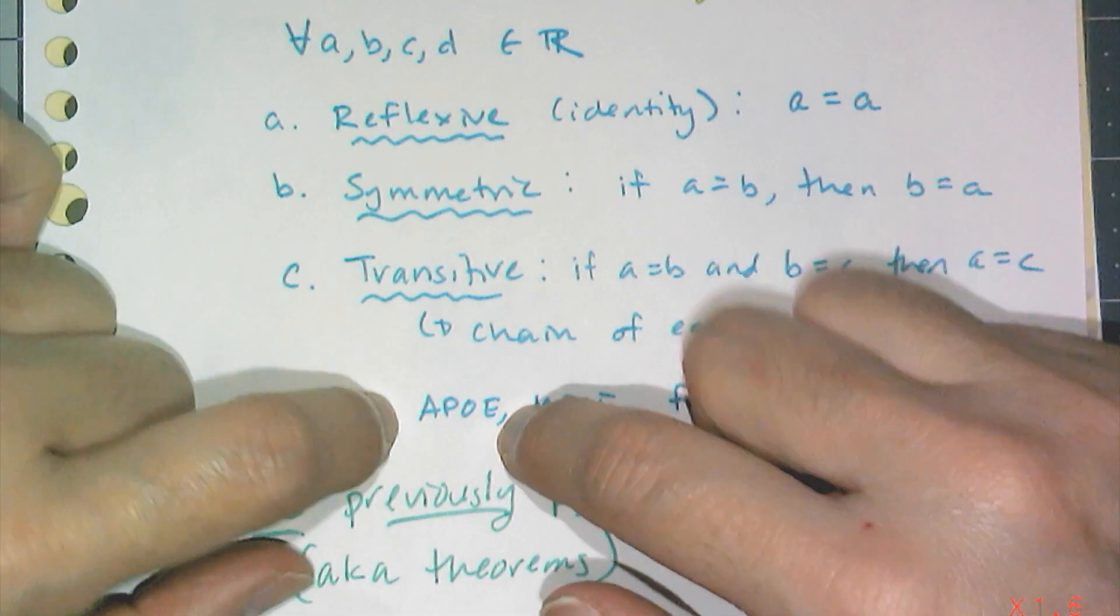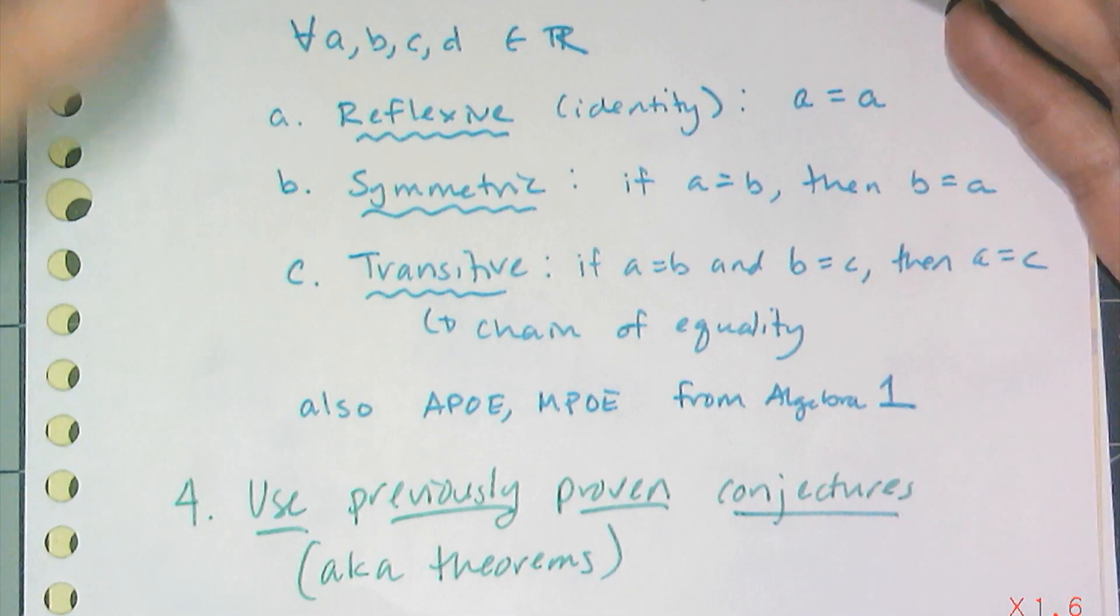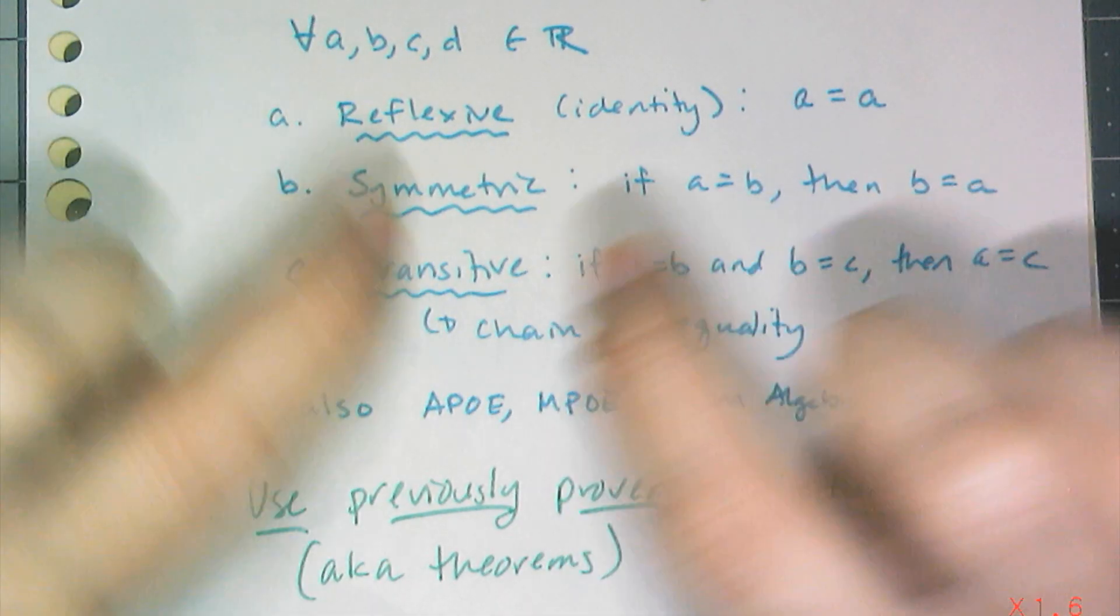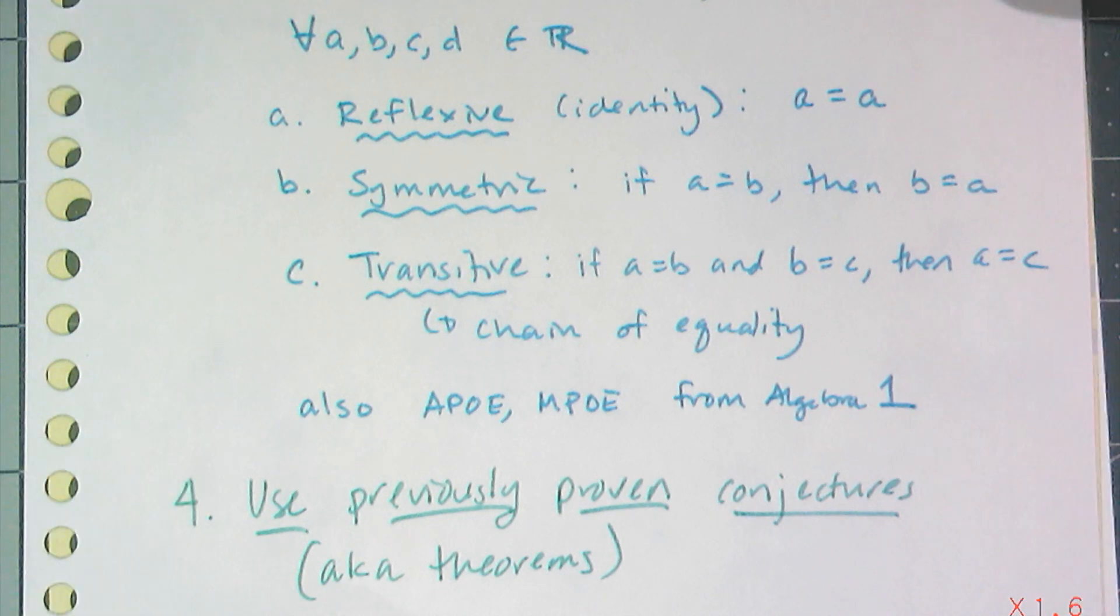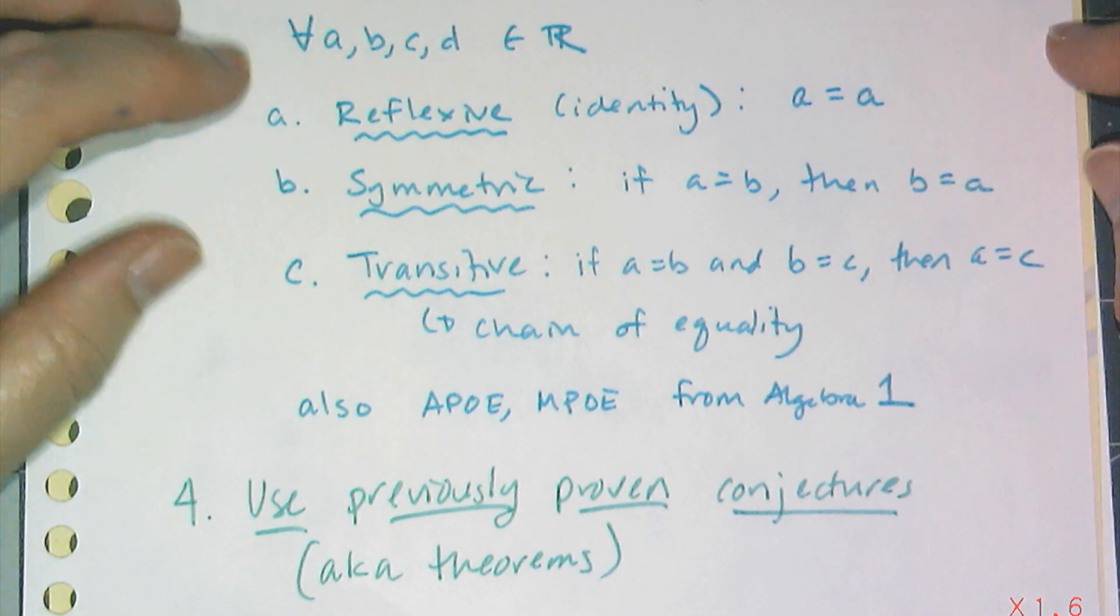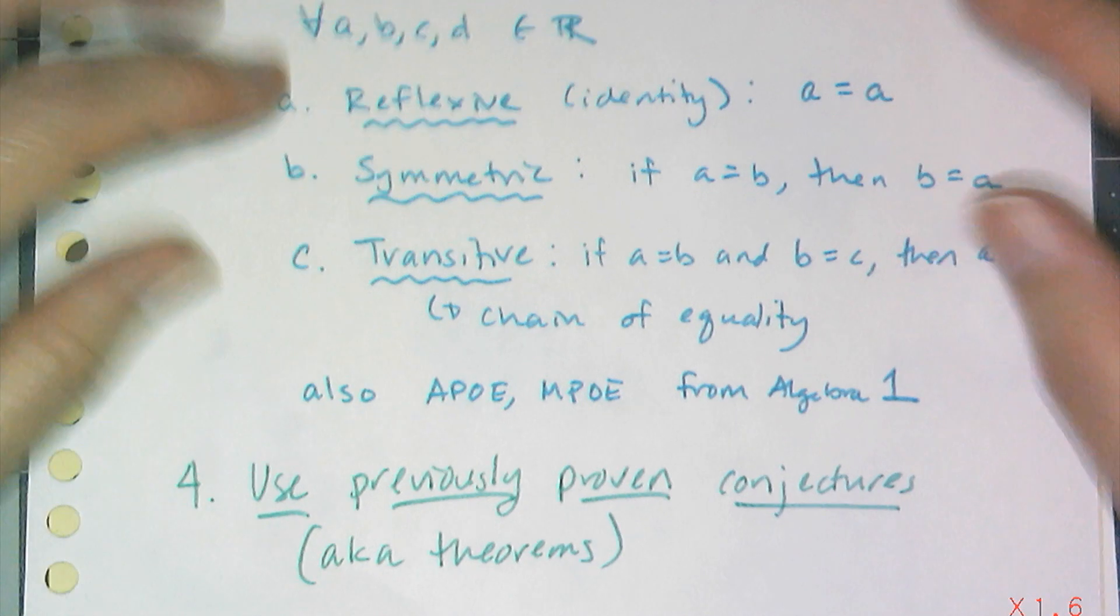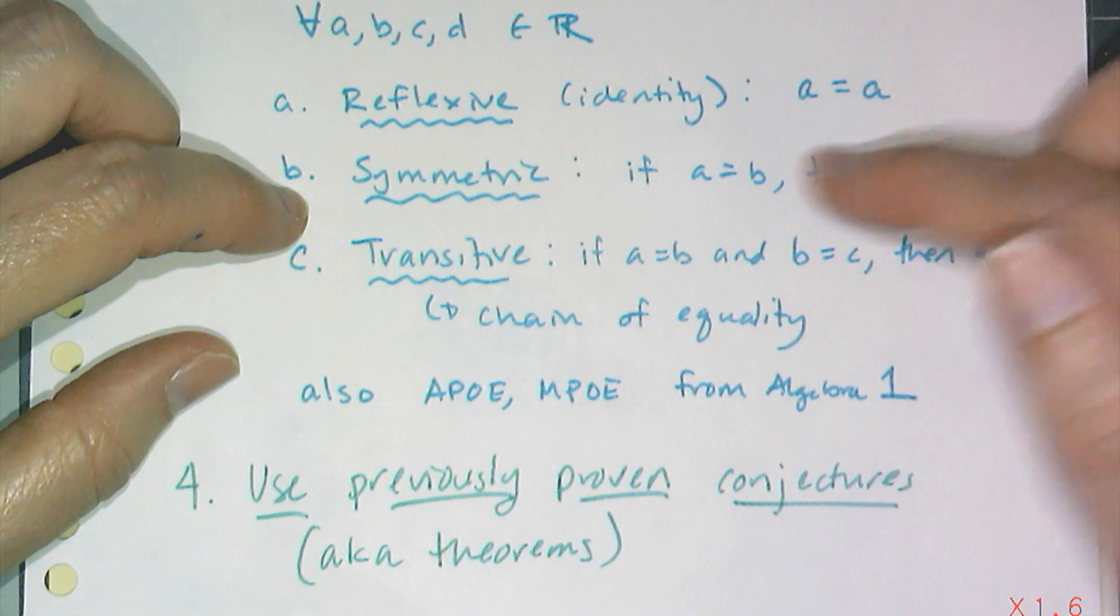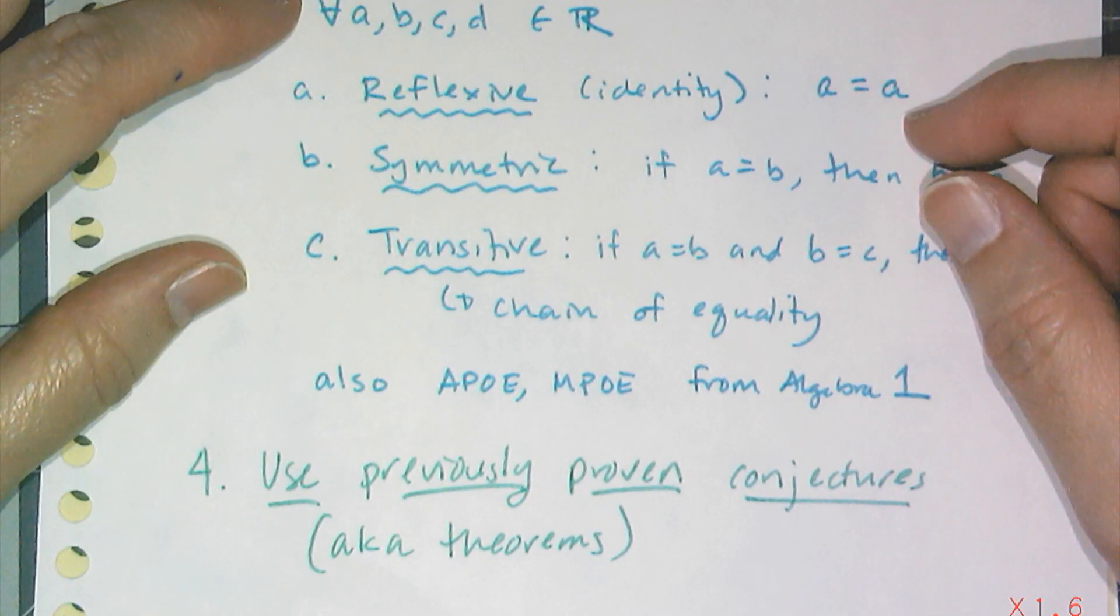You know four. The addition property of equality and multiplication property of equality, which you use when you solve equations. Subtraction and division kind of there also, but not really when you get past geometry. And then, of course, we have the properties of equality that seem super obvious that you don't use in algebra one, but you're going to use a lot when you start proving stuff is true. First one, it's like super obvious, like the reflexive property, which says A equals A. Something is equal to itself. Awesome. And then symmetric property says if A equals B, then B equals A. You just swapped which side of the equals the things were.